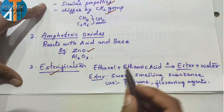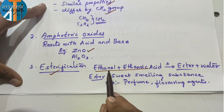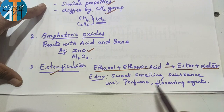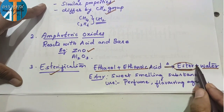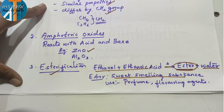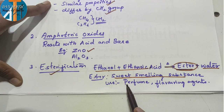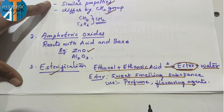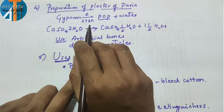Esterification: ethanol and ethanoic acid are combined with heat to form ester and water. This process is called esterification. The product is a sweet-smelling substance used as a perfume and flavoring agent.